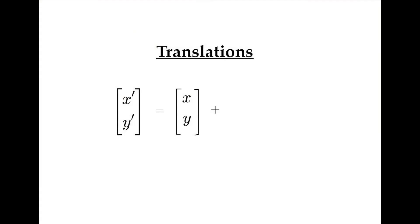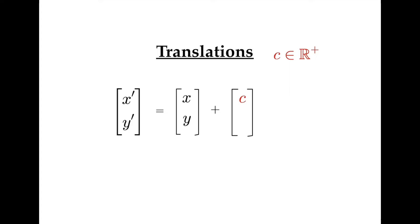In a matrix equation, any translations are shown in a two-by-one column matrix. If c is any positive real number, c placed in the x-position is added to the x-value and represents a translation of c units to the right. Minus c in this position represents a translation of c units to the left, and a zero here means there is no horizontal translation.